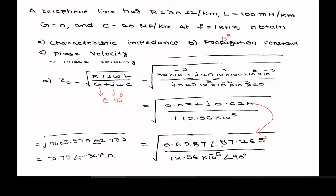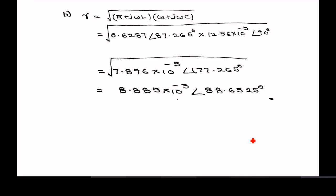Similarly, calculate the propagation constant. Instead of dividing the two numbers as done for Z₀, for gamma you multiply the magnitudes and add the angle parts. So the angles are 90 plus 87.265, which gives approximately 177.265 degrees. While taking the square root, divide this angle by 2, giving 88 point something degrees. Take the square root of the magnitude as well. This gives the value of the propagation constant.